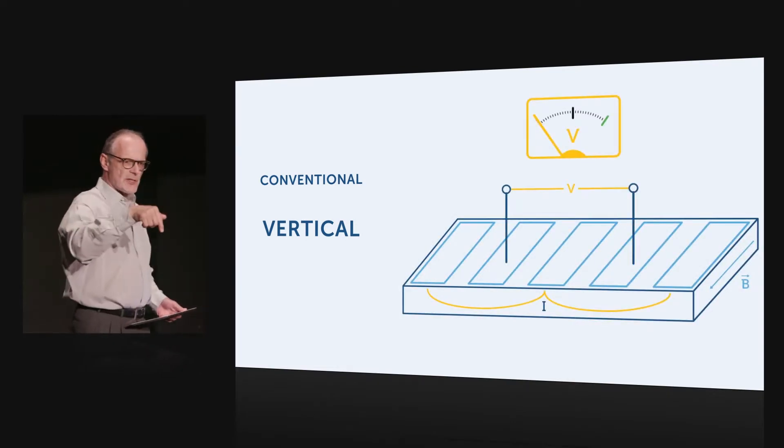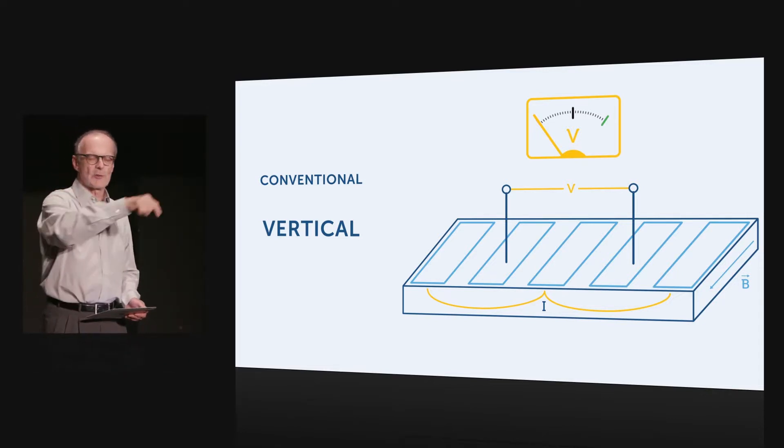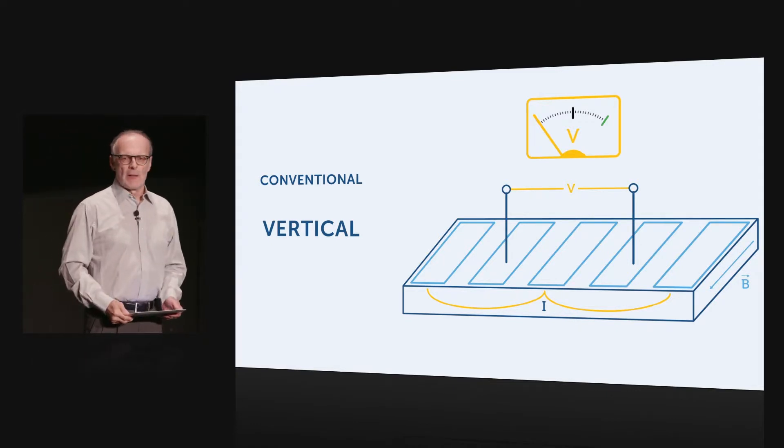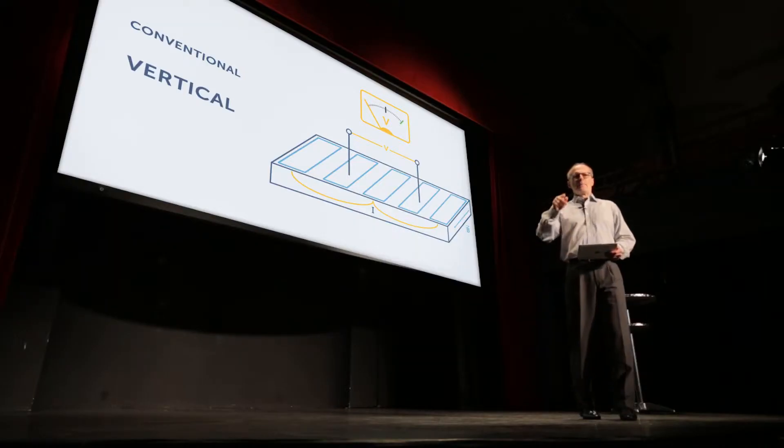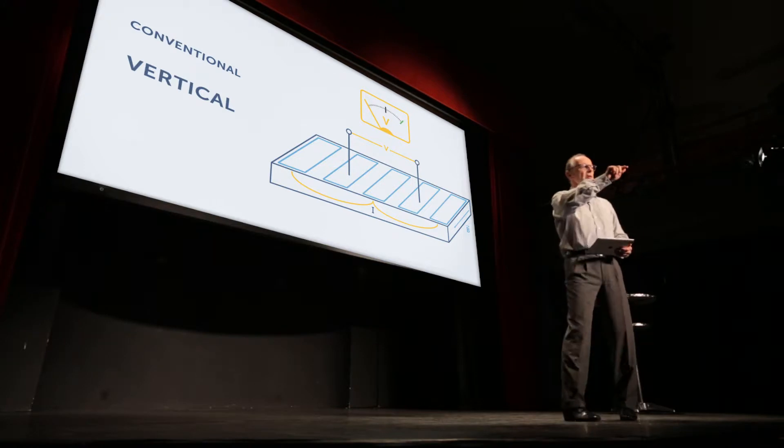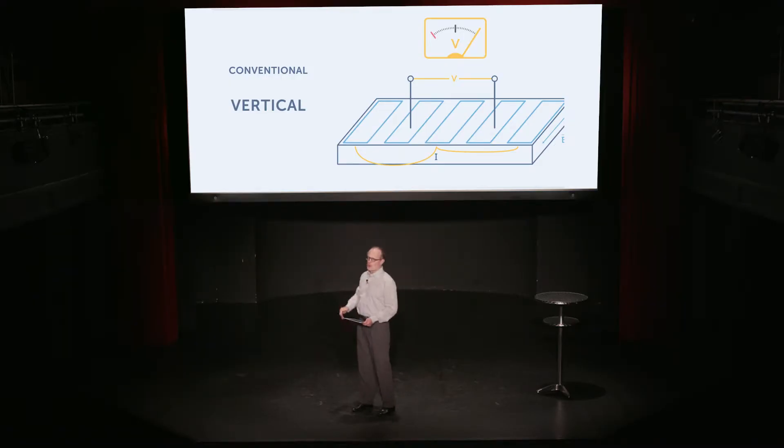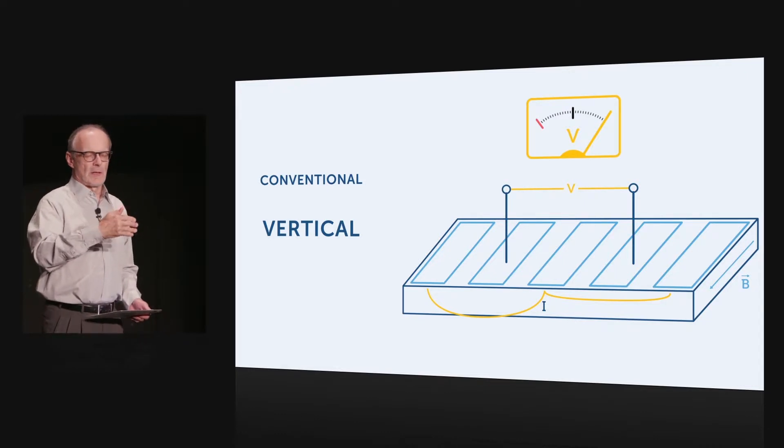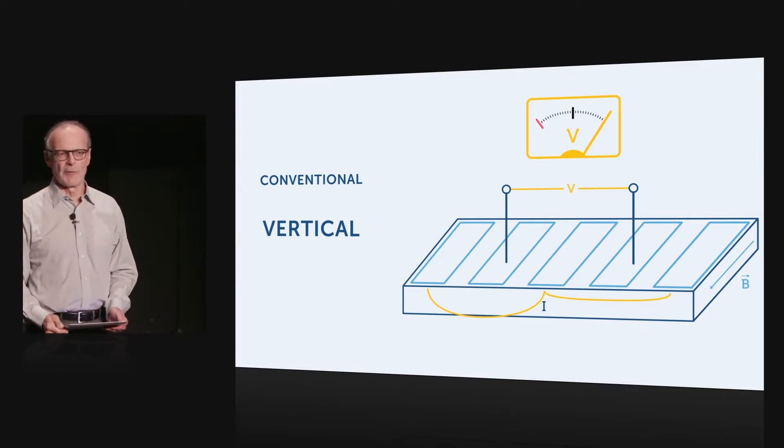The more recently developed vertical Hall geometry is a five-terminal device. The current is injected on one terminal and then is split, so the current flows in two different directions and is extracted on two different terminals. The plane that it is sensitive to is parallel to the plane of the semiconductor, and because the current is flowing in two different directions, you will get a differential voltage that is measured between those two voltage terminals, where once again, the magnitude of the voltage indicates the field strength and the sign indicates the direction of the magnetic field.